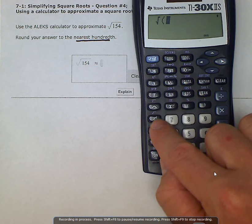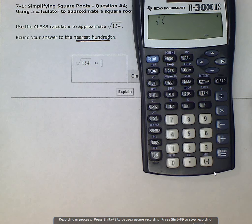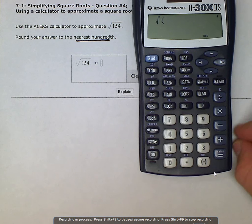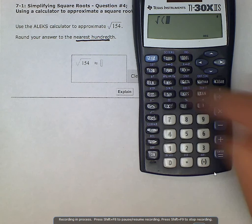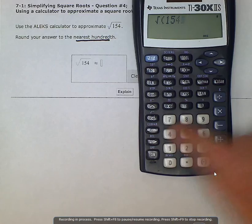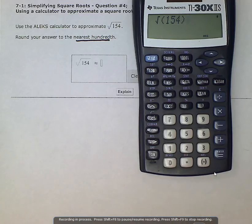So we hit second, then we hit the x squared to give us the radical, and then all we need to do is fill in the radicand there. So 154. We can close the parentheses, we don't have to, and we hit enter.